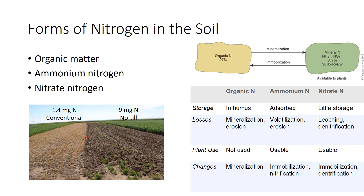Both mineral forms of nitrogen — ammonium and nitrates — are taken in by plants. Ammonium nitrogen bears a positive charge, and soil colloids attract the cation, while the nitrate ion is negative and moves freely through the soil and can be lost through leaching or denitrification.